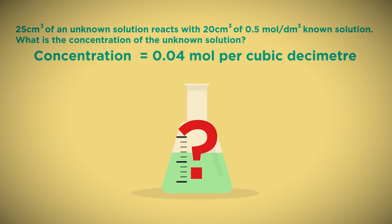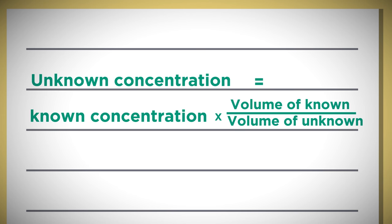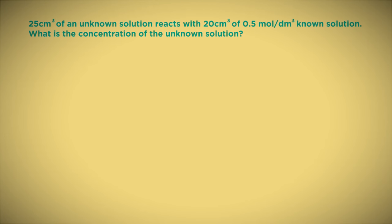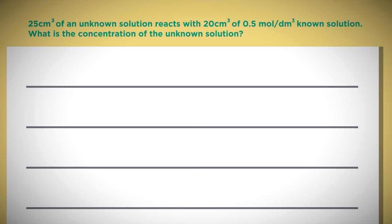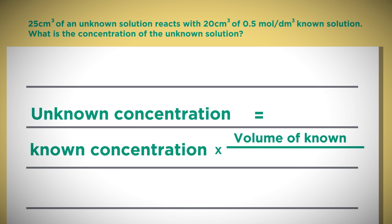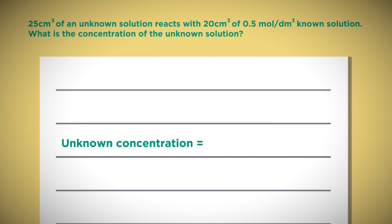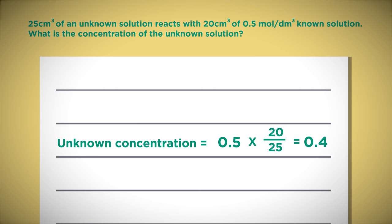It is much easier to take the time to understand what is happening, but if you prefer to just learn an equation, this is all you will need for titration calculations. The concentration of the unknown solution equals the concentration of the known solution multiplied by the volume of the known solution divided by the volume of the unknown solution. So the unknown concentration equals 0.5 multiplied by 20 over 25, which equals 0.4.